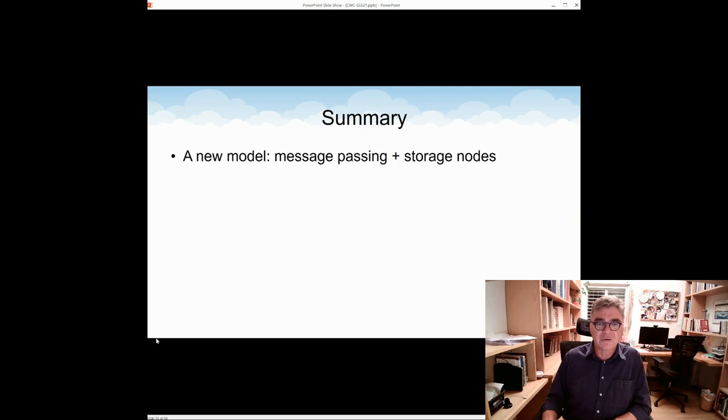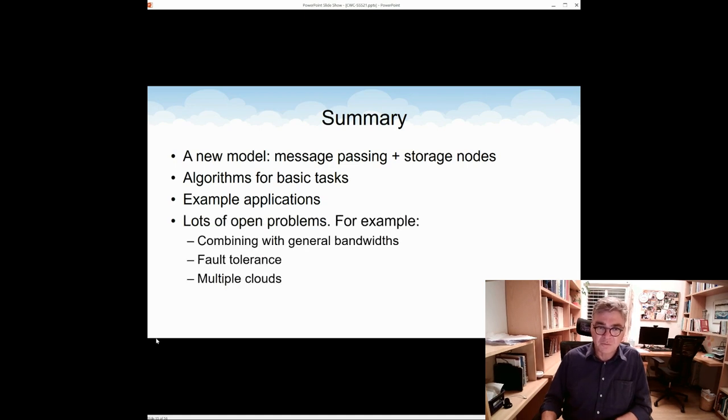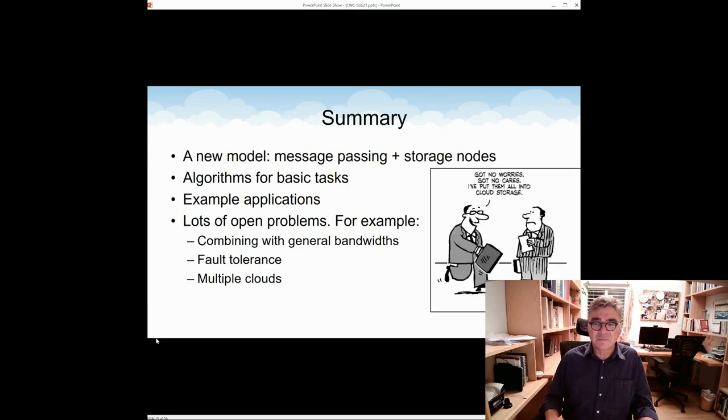So let me conclude. In the paper, we presented the new model of CWC, which is a combination of message passing with some shared memory or storage nodes. We presented algorithms for some basic tasks. And we also presented some applications, namely federated learning and the dedup operation. Since this is a new model, we have plenty of open problems. For example, we still don't know how to do combining in general topologies with general bandwidths. Another example is how to make a CWC system fault tolerant. This is wide open. It is also interesting to see what to do when we have multiple clouds, say when we want to retain some privacy. There are many more questions. I really encourage you all to look at them and to work on them because I think this is a viable model. And until then, let me leave you with this cartoon. Thank you and bye-bye.